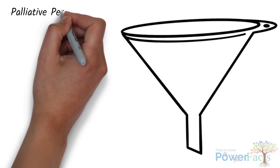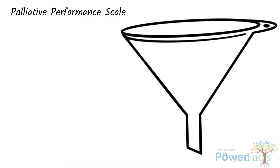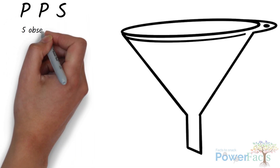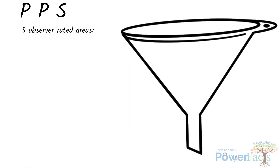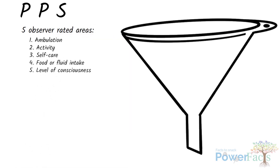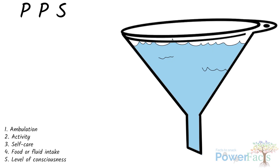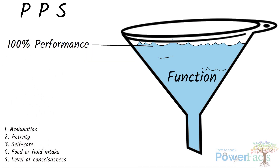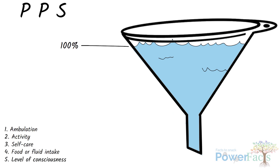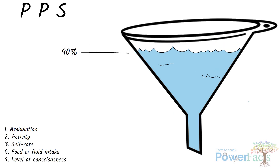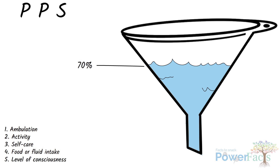Secondly, we have the Palliative Performance Scale, known as PPS. It measures performance status through five observer-rated areas which include ambulation, activity, self-care, food or fluid intake, and level of consciousness. Imagine a funnel filled with water, where water represents the functional categories. A funnel filled to the brim represents a performance status of 100% and an empty funnel means 0%, which signifies death. As the water level drops in decrements of 10%, so does the patient's functional status.